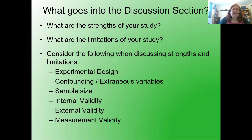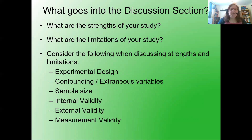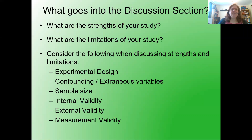Consider the following when discussing your strengths and limitations: the experimental design, confounding or extraneous variables, sample size, internal validity, external validity, and measurement validity. You can consider other pieces too, but those are the main ones to take into account.